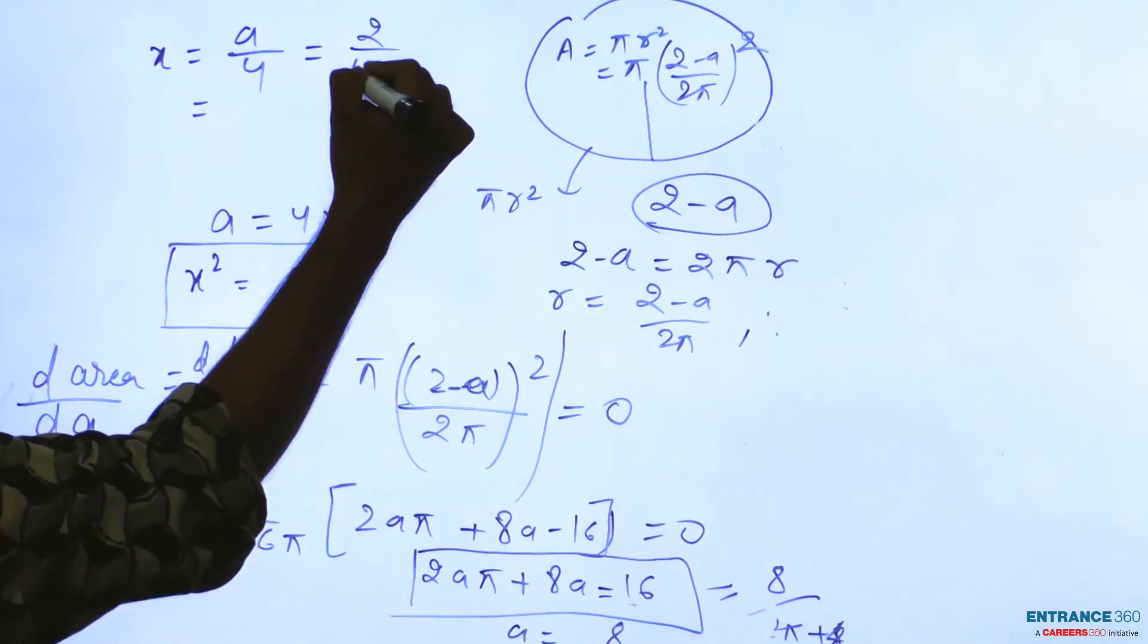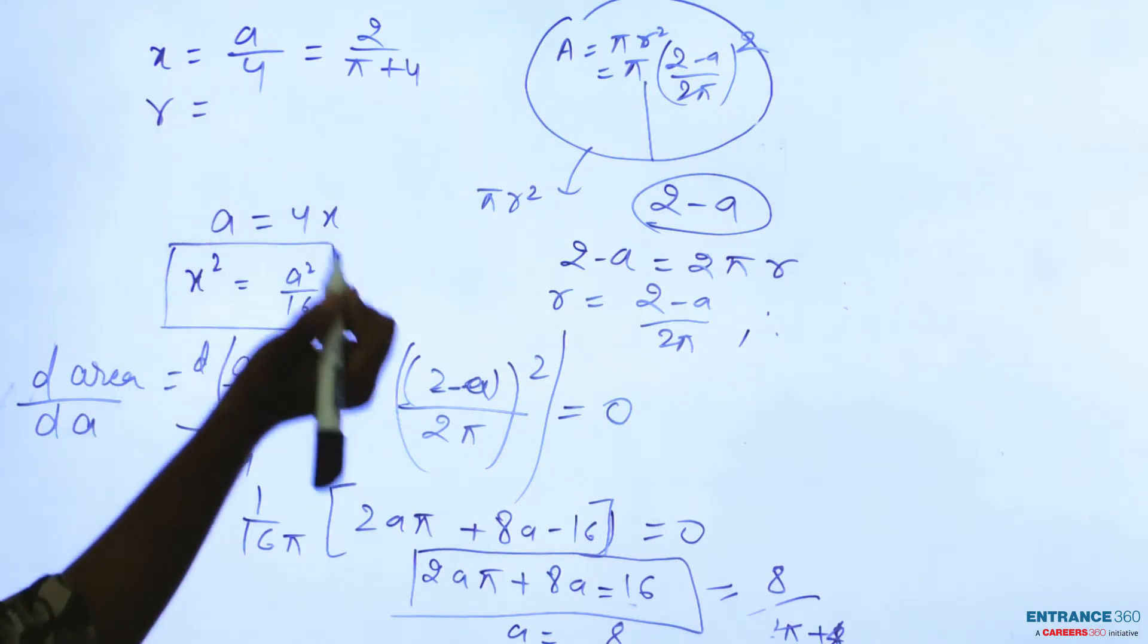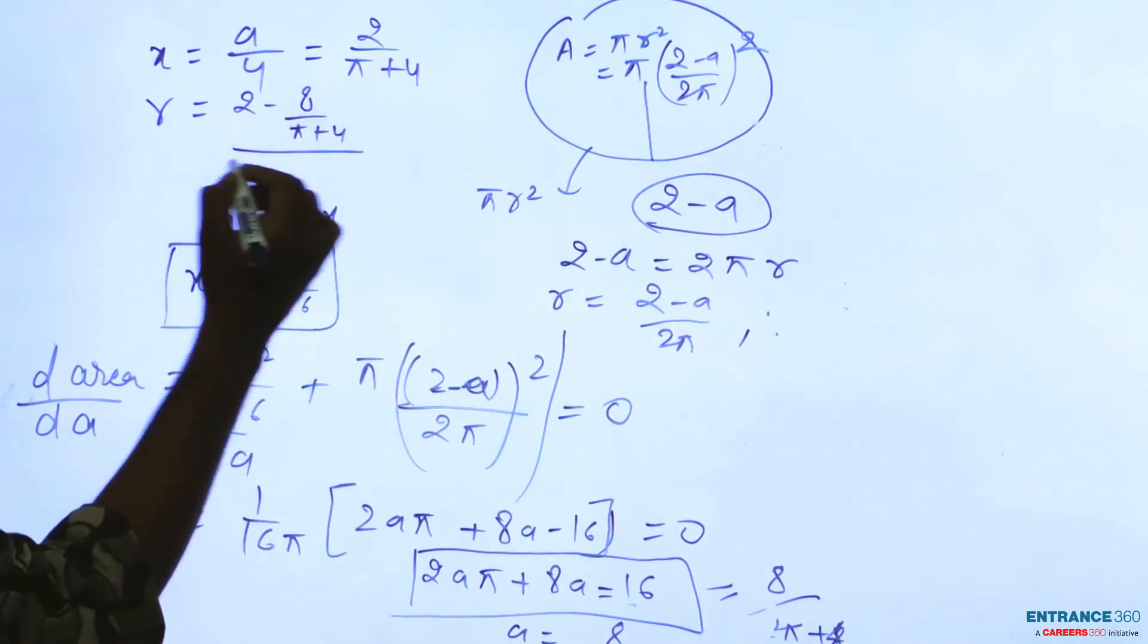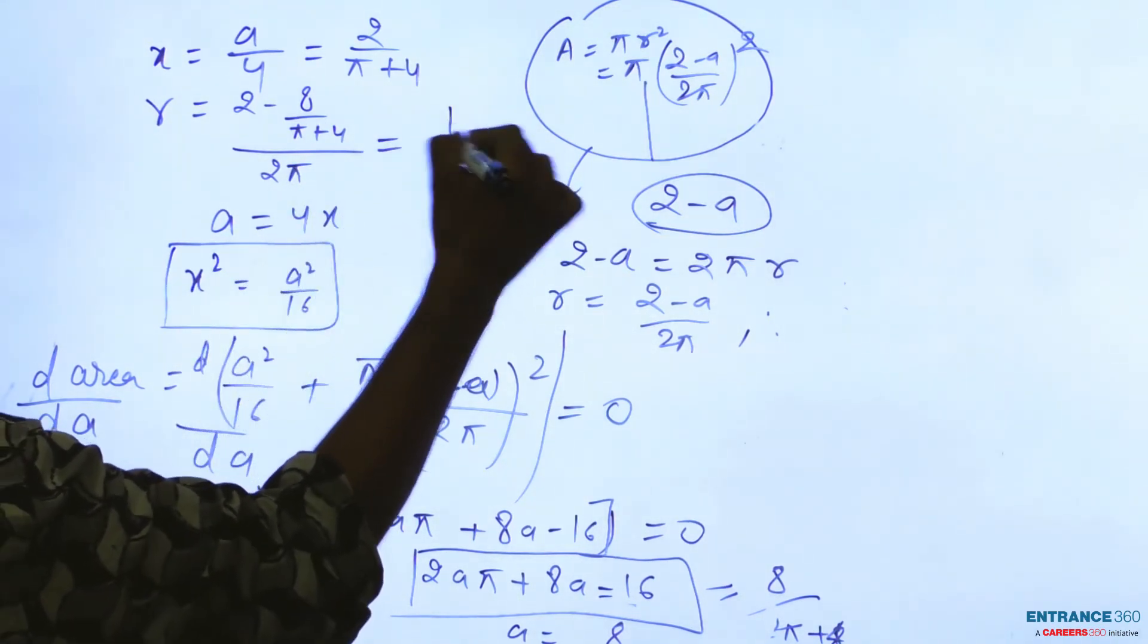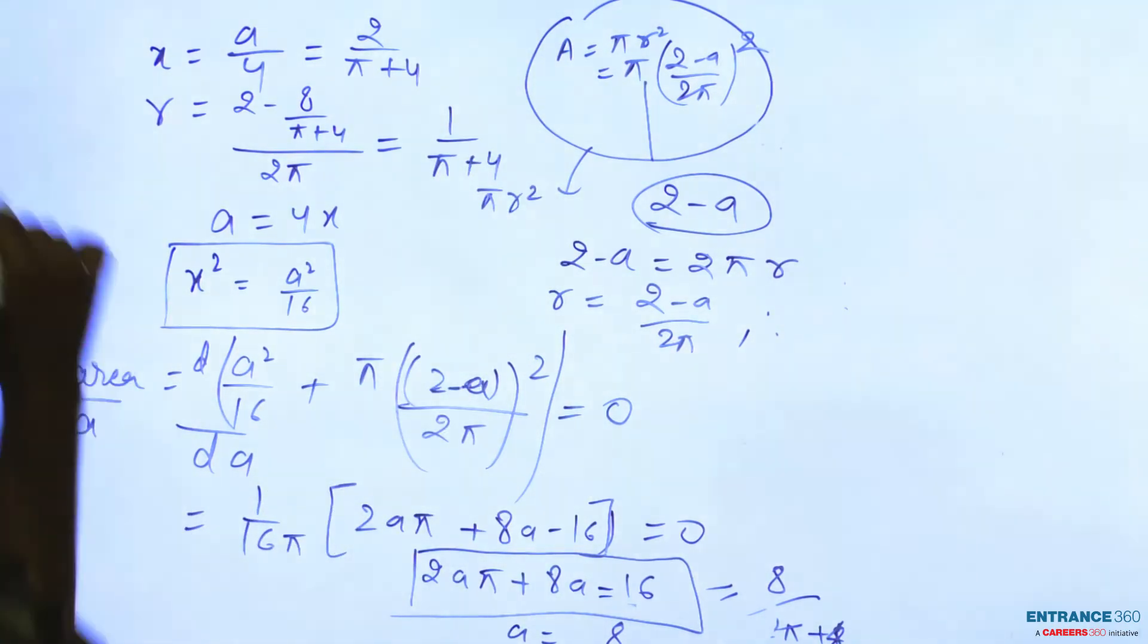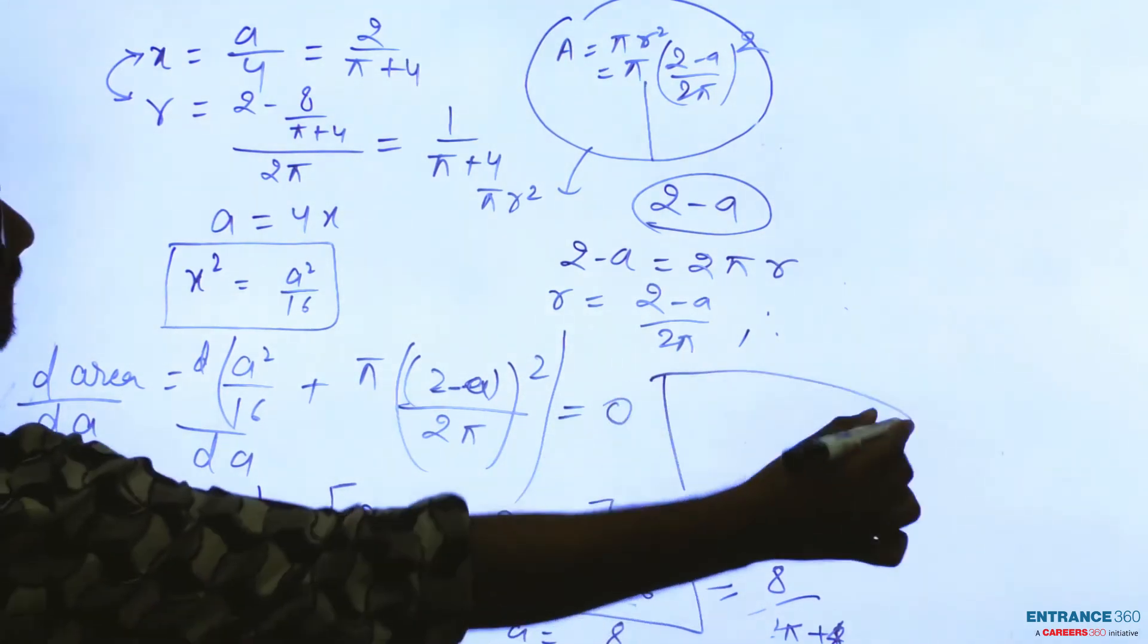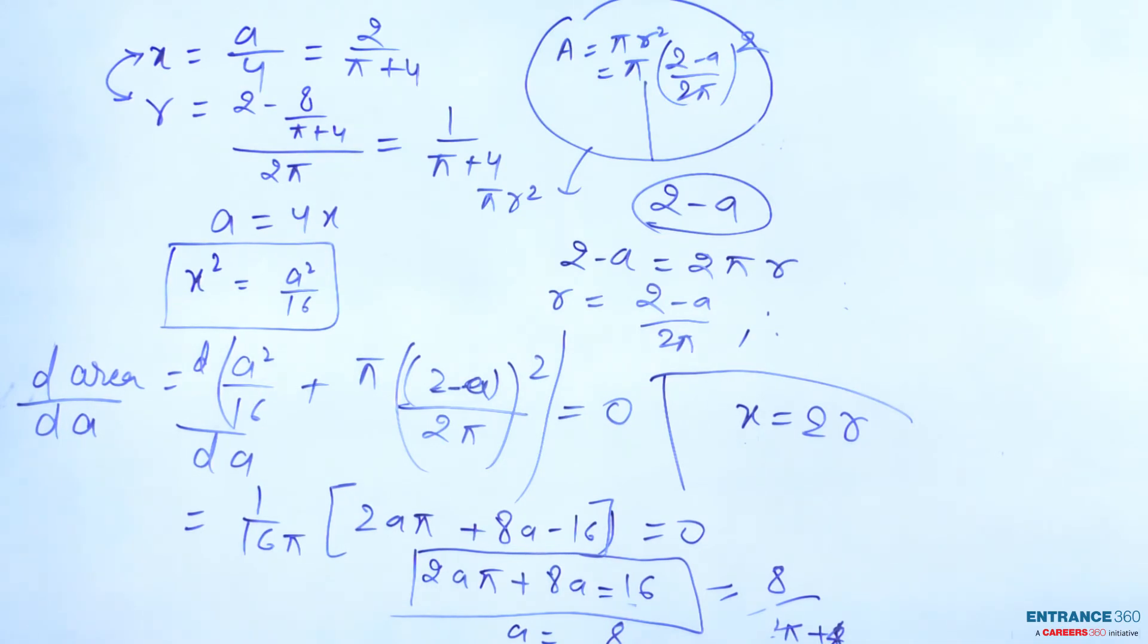Then if you put the value of a in equation x equal to a by 4, it will be equal to 2 by pi plus 4. And in terms of r, 2 minus a, a will be 8 by pi plus 4 by 2 pi, then it will be equal to 1 by pi plus 4. Then we have to find the relation between x and r, then you can see here easily x equal to 2r.